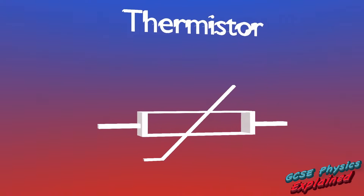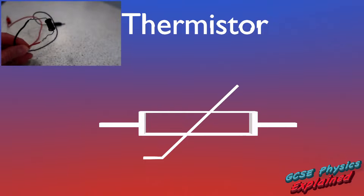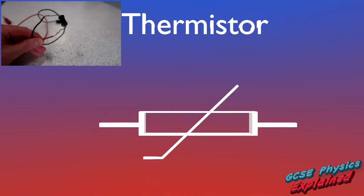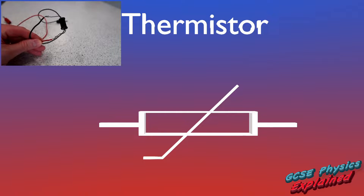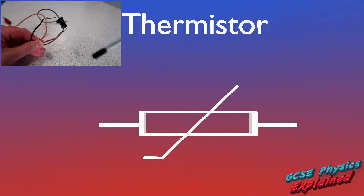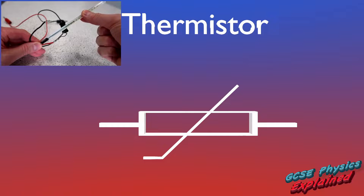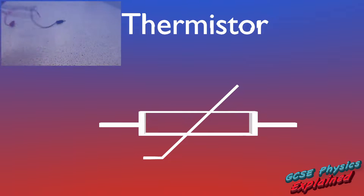Thermistor — well, it's a golf club through a resistor. Thermistors are used as heat sensors; they are resistors that change their resistance as the temperature changes. The symbol looks a bit like a thermometer going through a resistor at an angle.